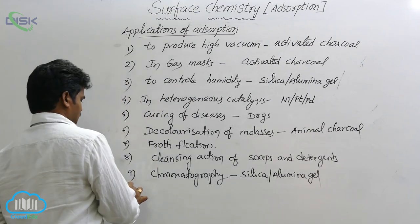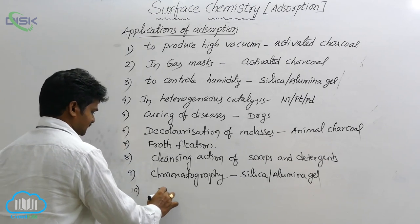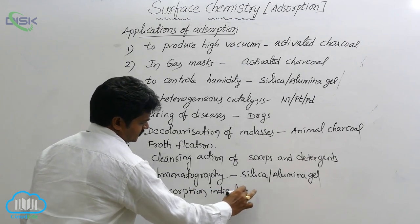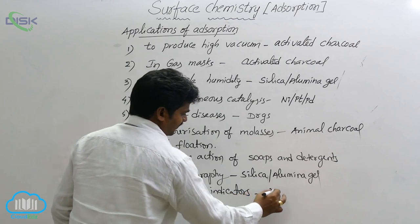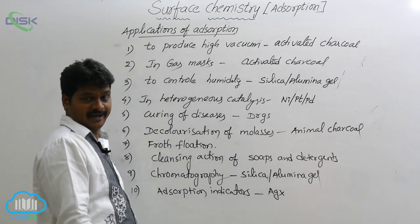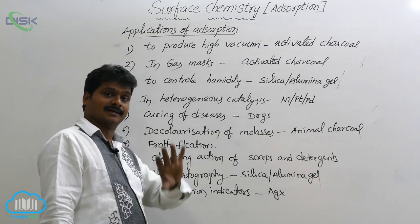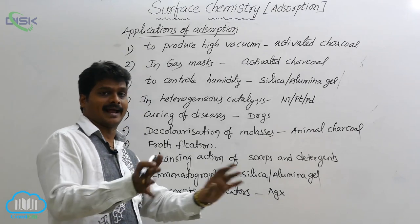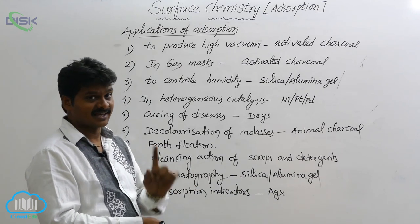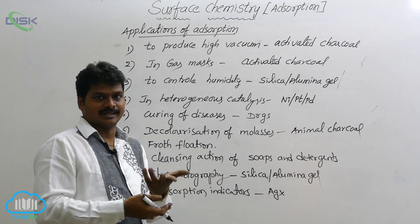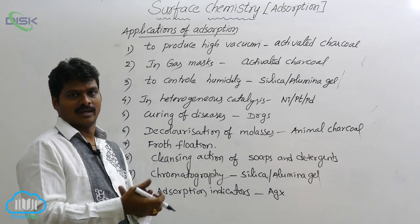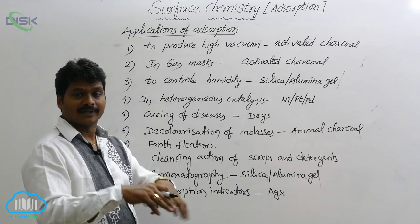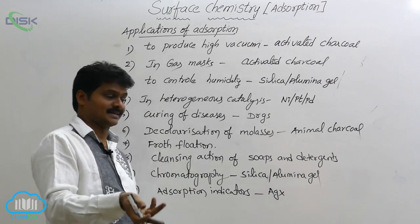The tenth application is adsorption indicators. Some silver halides — silver chloride, bromide, and iodide — are used as indicators in precipitation reactions. These indicators show a color change at the end point because of adsorption. They adsorb organic color dyes like eosine and fluorescein, and by adsorbing those dyes, they show a color change at the end point.